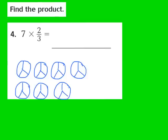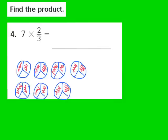Now I need to look at my numerator, which is a 2. That 2 says we're going to shade in 2 of those 3 equal parts. So we're going to shade in 2 of our 3 equal parts in each one of our circles. Once again, we've shaded in 2 of our 3 equal parts. Now we need to make a count to see how many are shaded altogether — we have 14 parts shaded in. So I'm going to make that 14 my numerator and write it down.